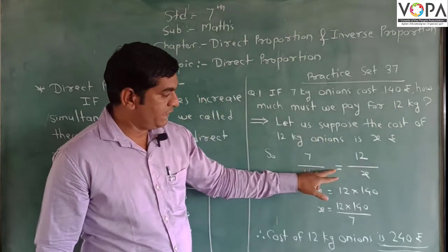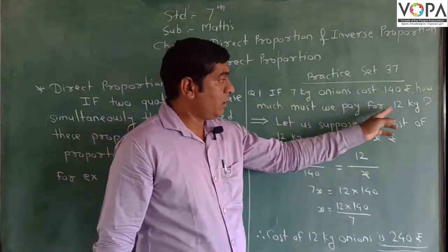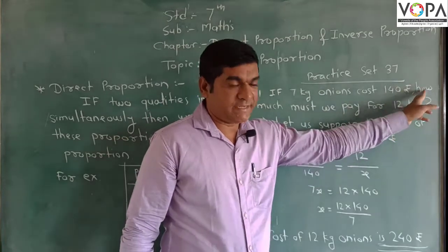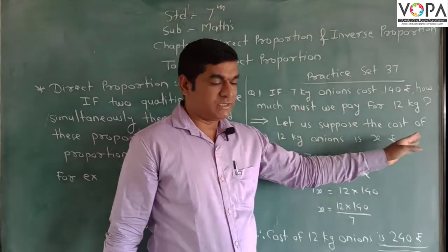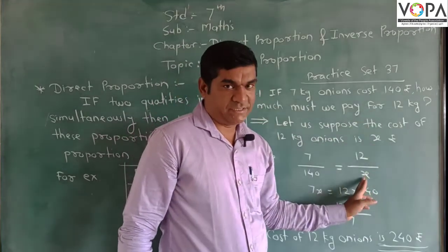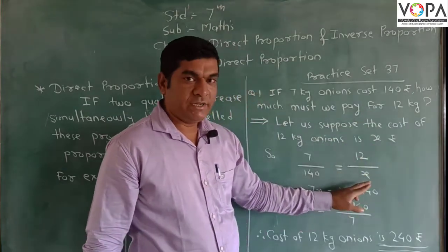So here 140. And the number of kilograms now is 12 kg. So we write at the upside the 12. And the cost we suppose for this is the amount x rupees. So that is 12 upon x.